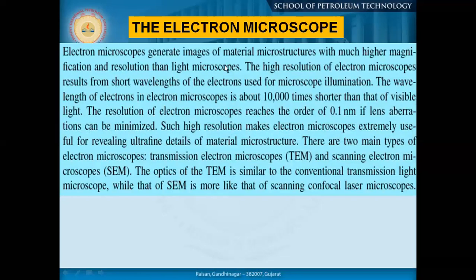Electron microscopes generate images of material microstructure with much higher magnification and resolution than light microscopes. The high resolution of electron microscopes results from the short wavelengths of the electrons used for illumination. The wavelength of electrons in an electron microscope is about 10,000 times shorter than that of normal visible light, which is why the resolution of images obtained with SEM is much higher than with the normal optical microscope.